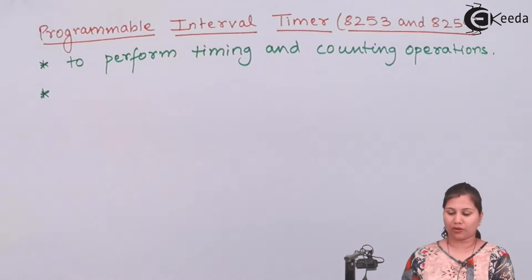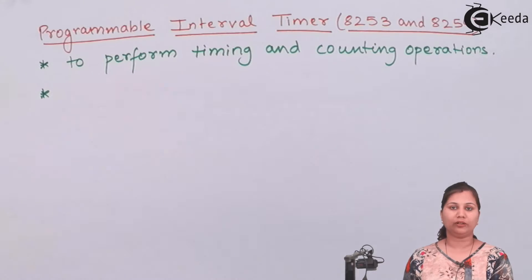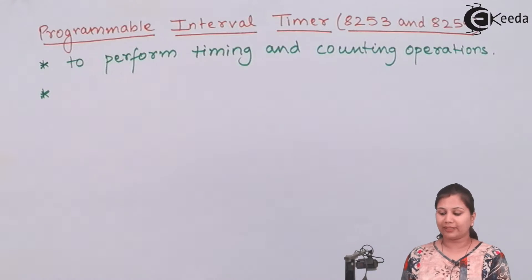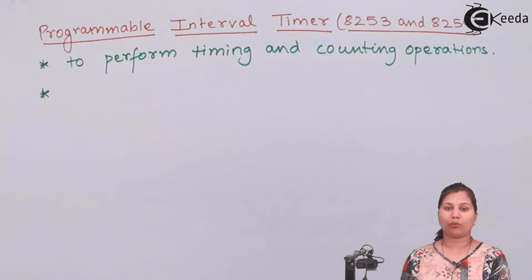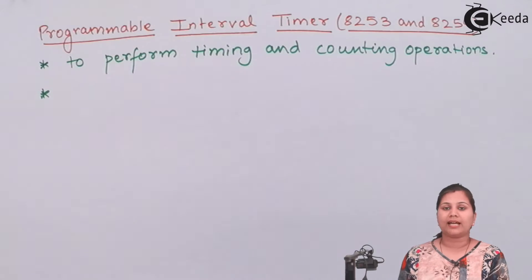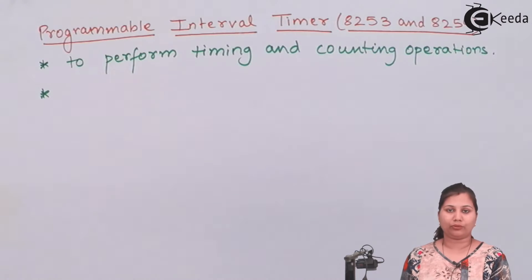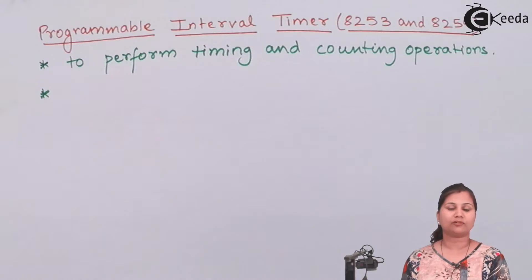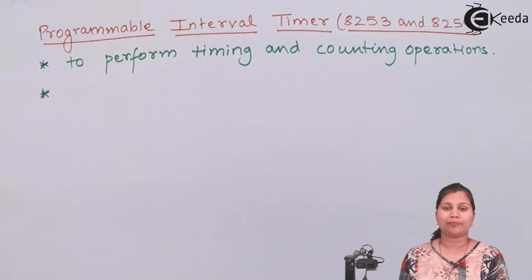They are counters, or we can say they are timers in which we load a count, and then these timers start decrementing that count until its value reaches 0. That count provides some time delay, meaning these 8253 and 8254 ICs provide some time delay to the microprocessor. The need for these external timers arises when the microprocessor is performing a task and in between tasks it needs a fixed time delay — suppose 10 seconds.